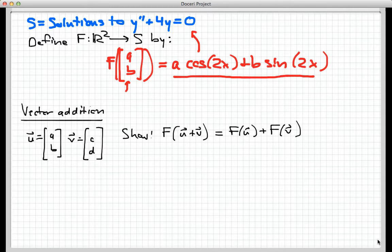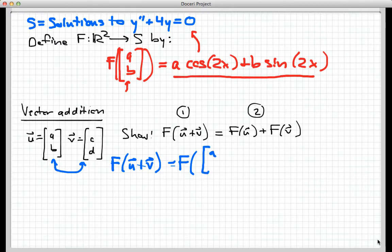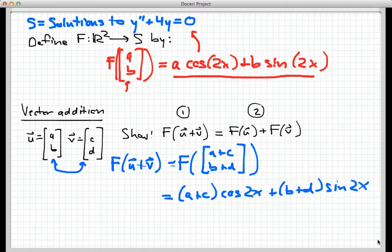The way I'm going to show this is to compute the left-hand side in one stage, then the right-hand side in the second stage, and make it clear that they're equal to each other. So what is F(U+V)? Let's compute the inside first. U+V would just be adding these two vectors together, so that would be the vector [a+c, b+d]. If I put that vector into F, I'm going to get this function out: (a+c)·cos(2x) + (b+d)·sin(2x). That's the result of stage one.